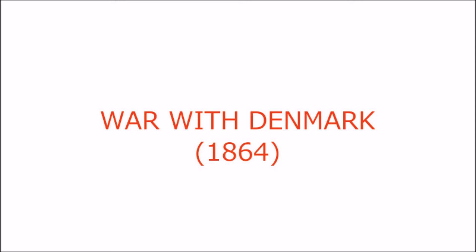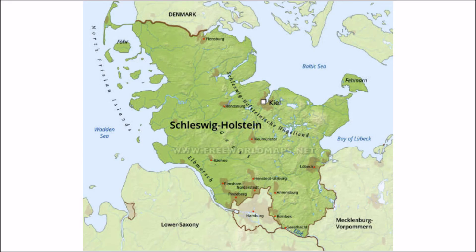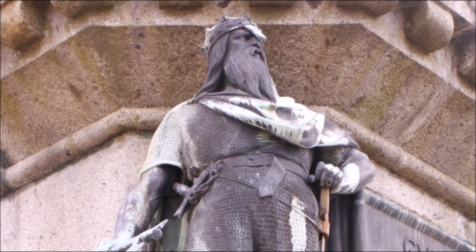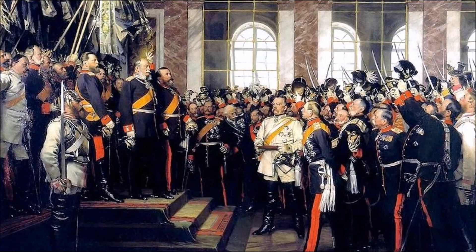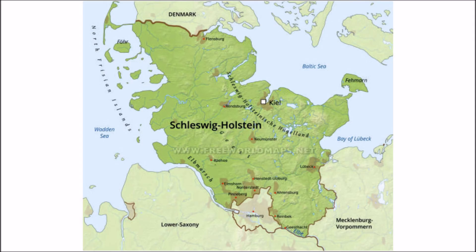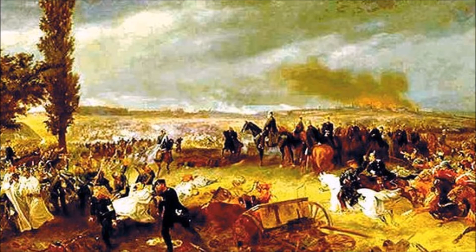War with Denmark 1864: This conflict took place over the Schleswig-Holstein question. The Duchy of Schleswig was under the control of Denmark, whereas Holstein was a member of the German Confederation. When the Danish ruler tried to incorporate it into Denmark, Prussia resented it and Bismarck opposed it, convincing Austria to help him deal with the Danish ruler. With Austria's help, Bismarck declared war on Denmark and defeated it. After the conflict, the two duchies became a bone of contention between Prussia and Austria, which in turn led to the Austro-Prussian conflict.